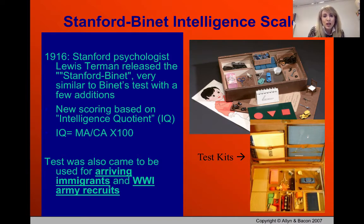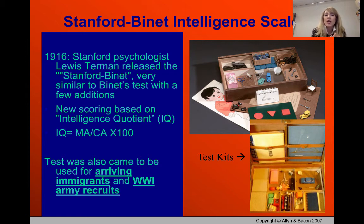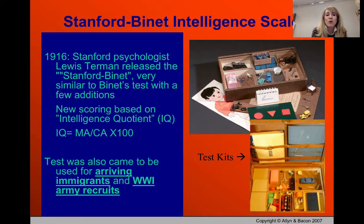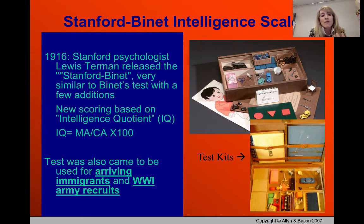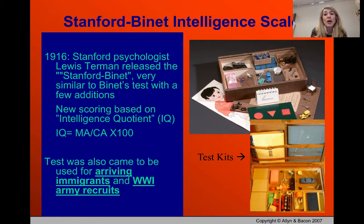Terman developed a way to give an actual IQ score using the Stanford-Binet test. The IQ score was calculated as mental age (MA) divided by chronological age (CA), times 100. So if you had a mental age of 12 and a chronological age of 12, that's 1 times 100 — an IQ of 100. A higher mental age than chronological age yields an IQ above 100, while a lower mental age yields an IQ below 100.